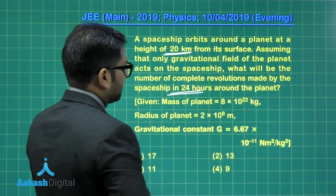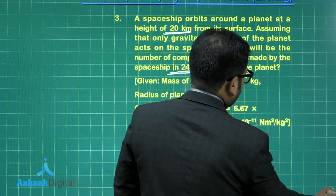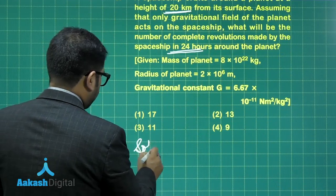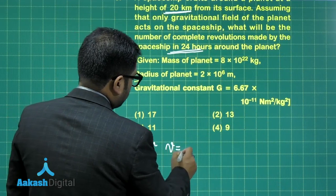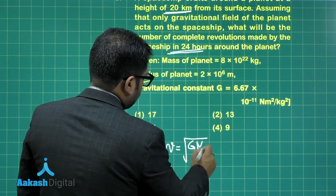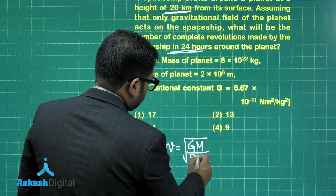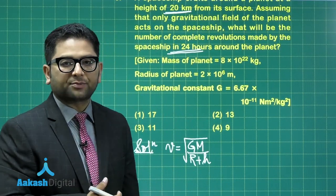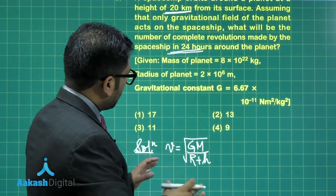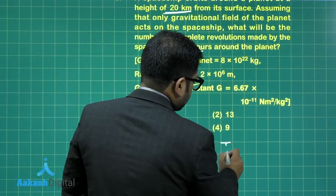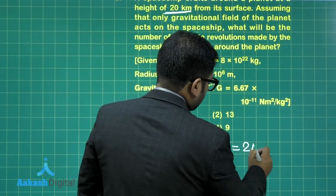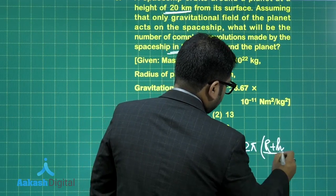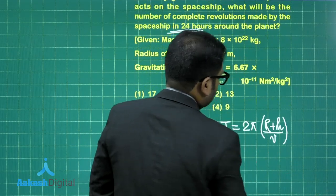This time the planet is not Earth. You can see the radius is something different, but that hardly matters. If I calculate the orbital speed, the orbital speed is going to be √(GM/(R+h)), where capital R is the radius and h is the altitude, given as 20 km. Once you get the orbital speed, you can calculate the time period. The time period is going to be 2π(R+h) divided by the orbital speed. So you got the time period.